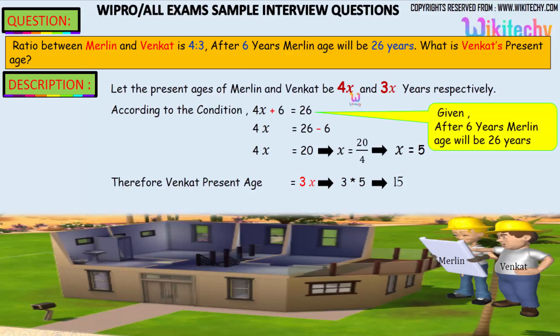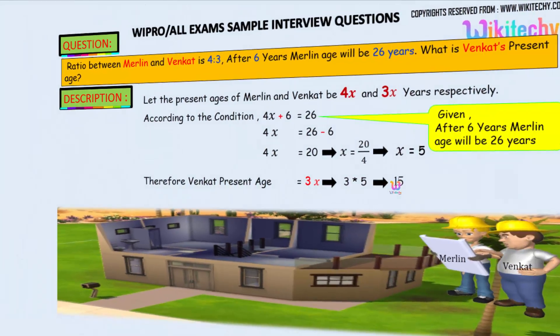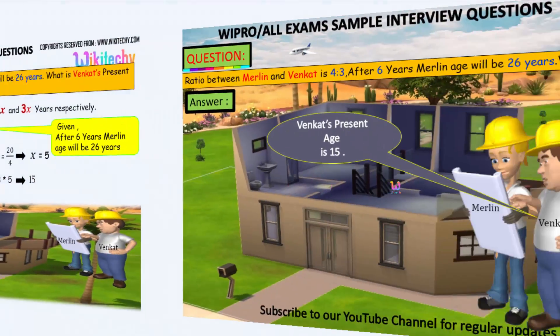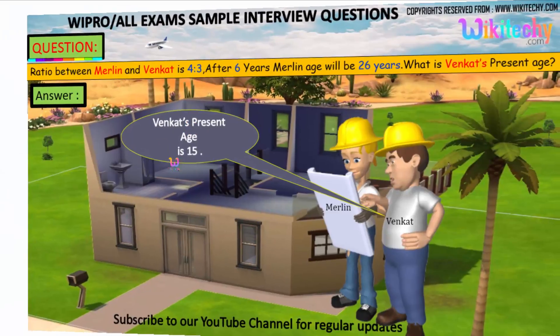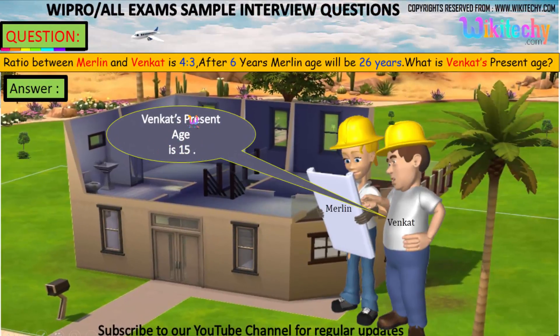So Venkat's age is what we need to identify. Venkat's age is 3 into x, so 3 into 5, that is 15. That is the age of Venkat. So the answer is 15 — Venkat's present age is 15.